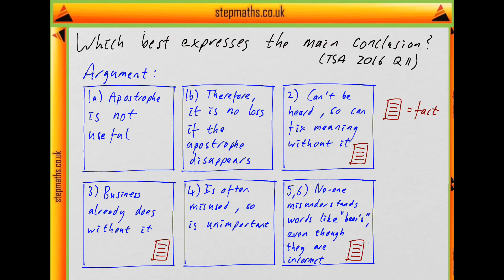Let's look at this argument. It says the apostrophe has limited usefulness as a punctuation mark, and so it won't be a loss if it disappears altogether from English. I'll split this into two sentences: one saying the apostrophe isn't useful, and because there's a 'so', we'll split this off as something else. They say it can't be heard at all in speech, which suggests we can make our meaning clear without it.